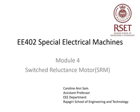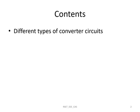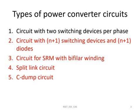Welcome back to the RSH online course on special electrical machines. We were discussing the switched reluctance motor model in the last lecture. In this lecture we will continue our discussion on different types of converter circuits. As per our discussion in the previous lecture, there are different types of power converter circuits for an SRM drive — mainly 5 different types. The first one, the circuit with 2 switching devices per phase, was already discussed in the previous lecture, so we will continue with the remaining 4 types.